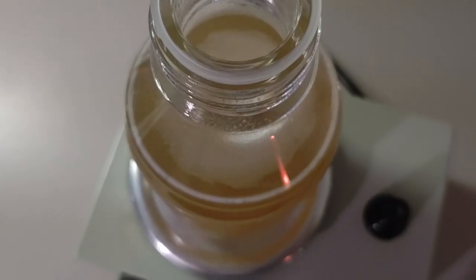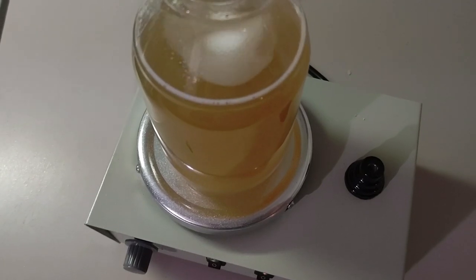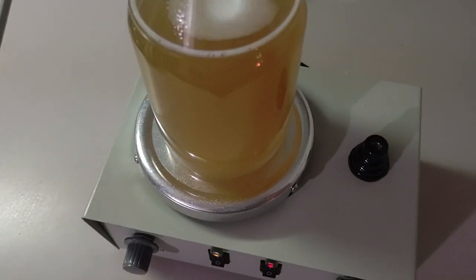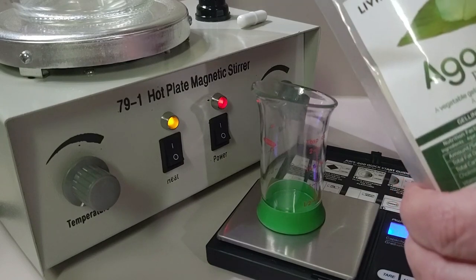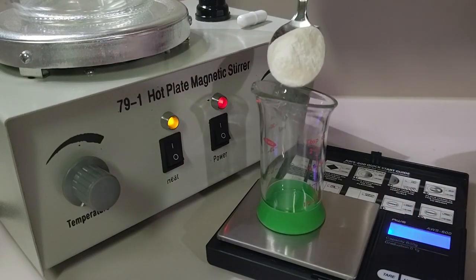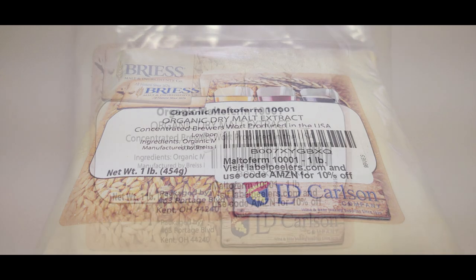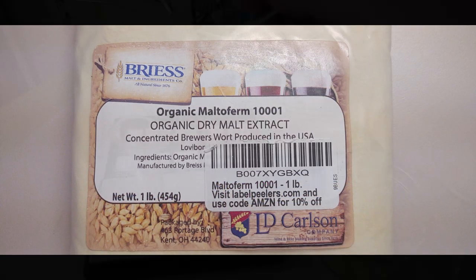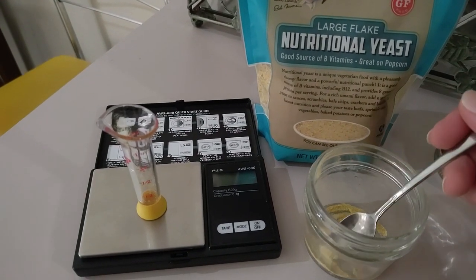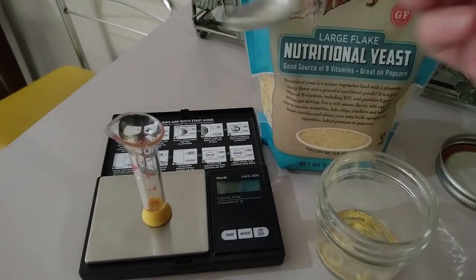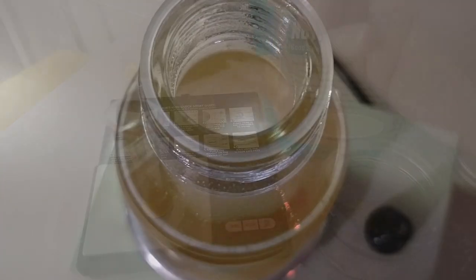We experimented with many different recipes, and we really feel like we've perfected this one. When creating 500 milliliters of agar, you want to use 10 grams of agar, 7.5 grams of malt extract, and 0.25 grams of nutritional yeast. Yes, that's 0.25 grams of the nutritional yeast to create 500 milliliters.